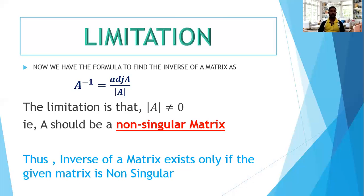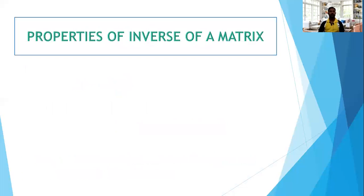Therefore, to find A inverse, the two steps are: first, find the determinant of A. If it is not equal to 0, then find the adjoint of A, and then divide adjoint of A by determinant of A. Note that adjoint A will be a matrix, and a matrix divided by a number is scalar multiplication — that is, adjoint A divided by determinant of A.